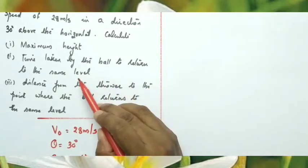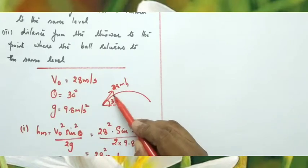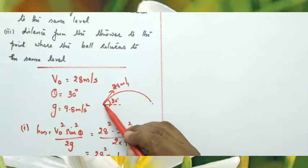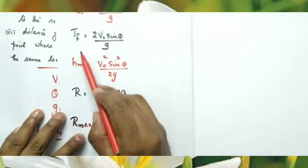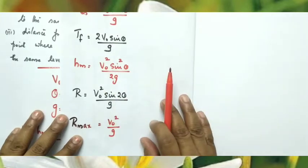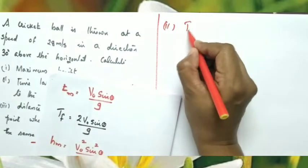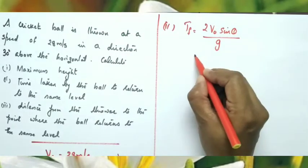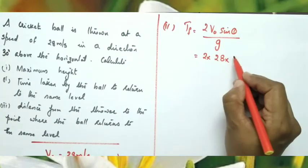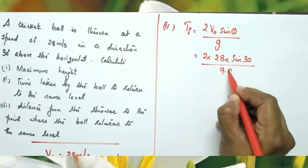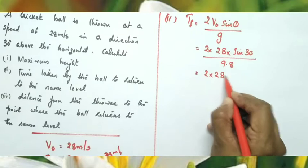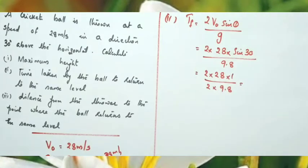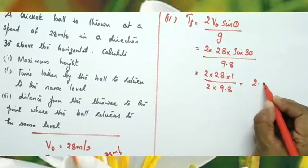For the time of flight (time for ball to return to same level), the formula is T_f = 2V₀ sin θ / g. Substituting: T_f = 2 × 28 × sin 30° / 9.8 = 2 × 28 × (1/2) / 9.8. After simplification, the time of flight is 2.9 seconds.